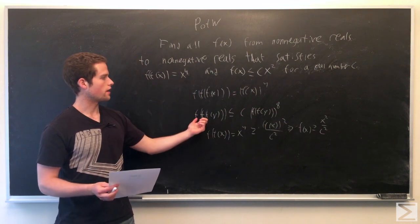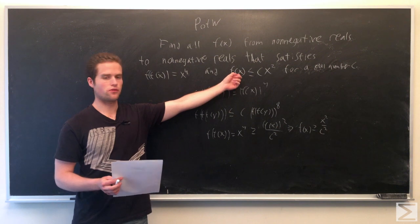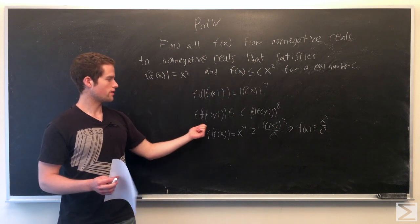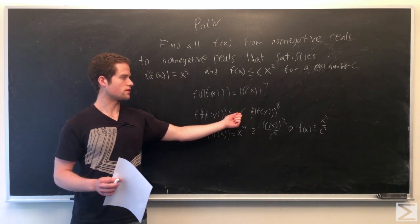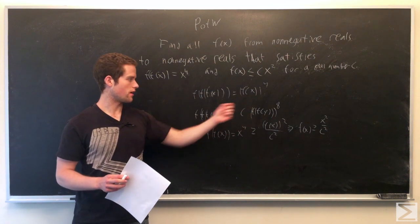Using this and the inequality here, so for x, plug in f of f of y, so 3 f's of y is less than or equal to c times f of f of y to the 8th.